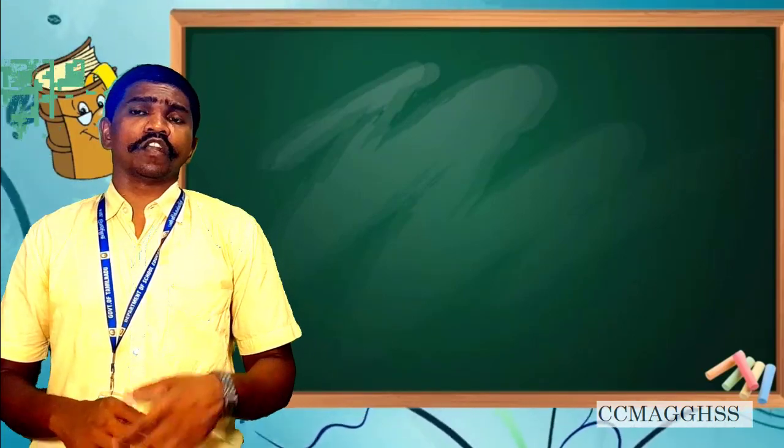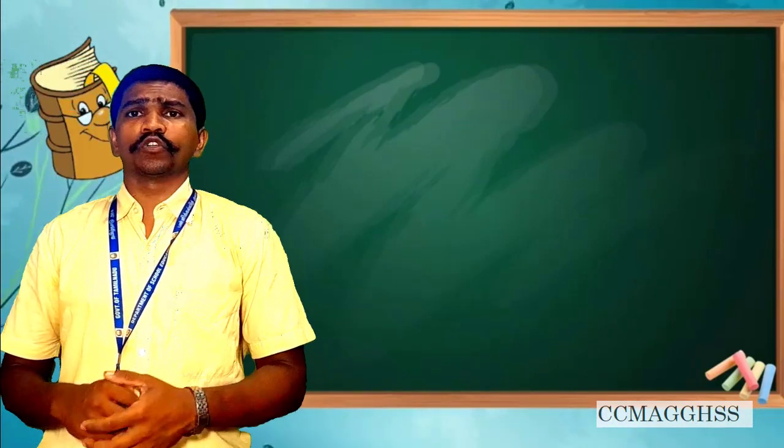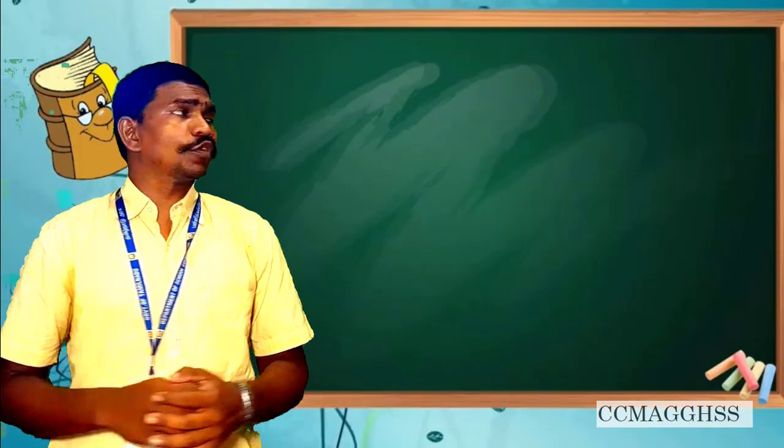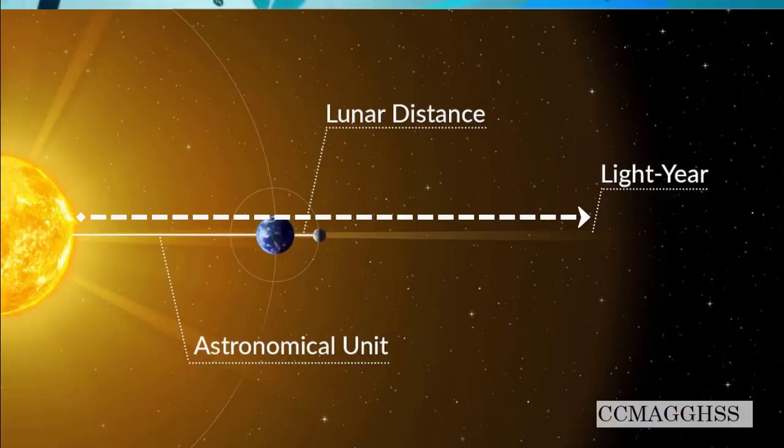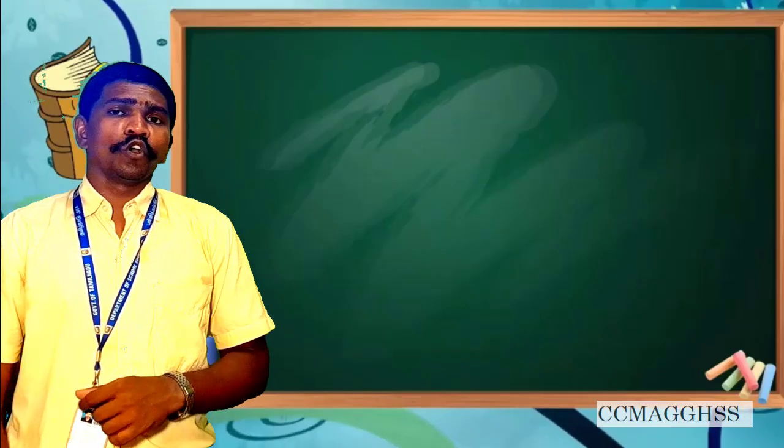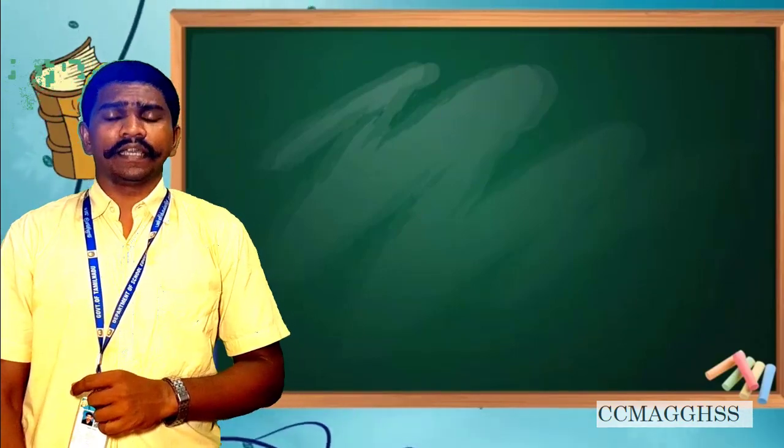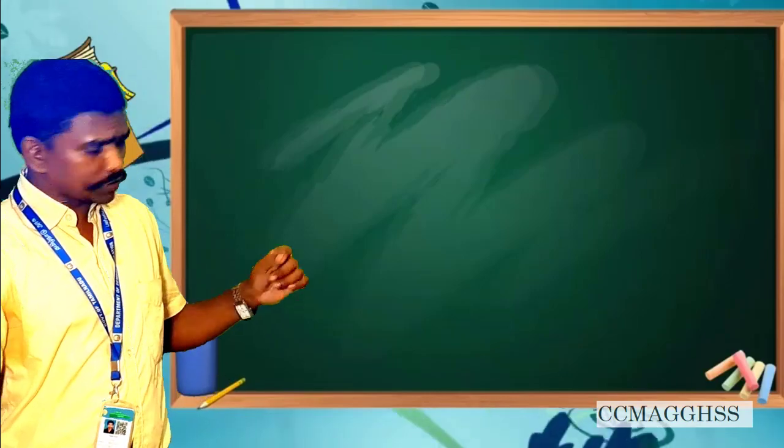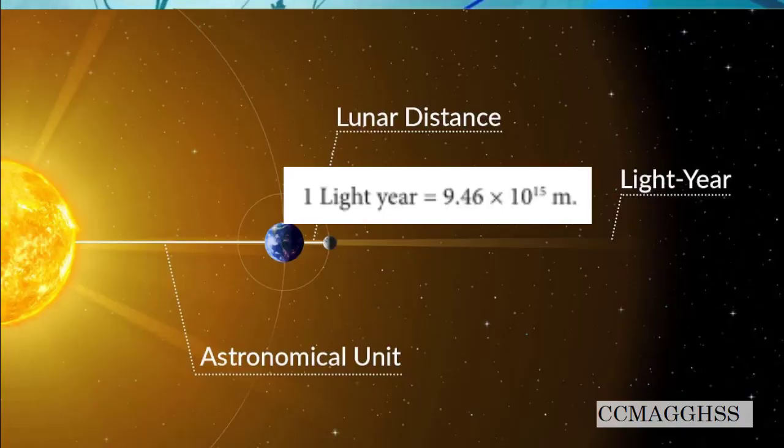The last chapter deals with measuring larger units just like light years and astronomical unit. Light year is - you go for the definition. One light year is defined as the distance traveled by light in a vacuum during the period of 1 year. For 1 year, how much the light is traveled is called light year. For that, we have an equation: 1 light year is equal to 9.46 into 10 to the power of 15 meters.